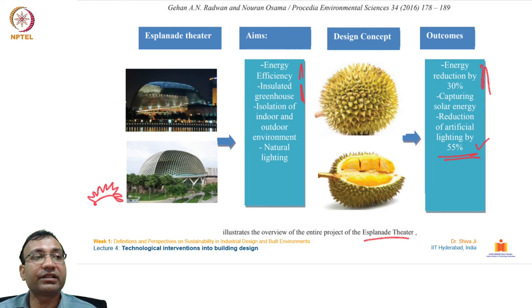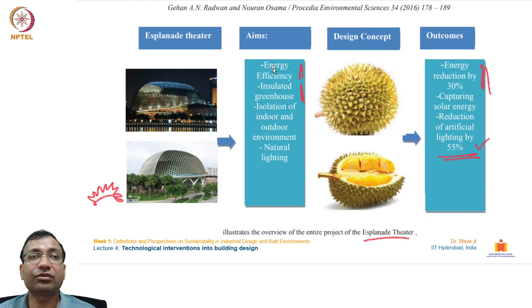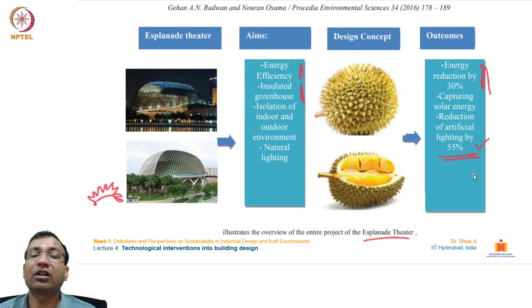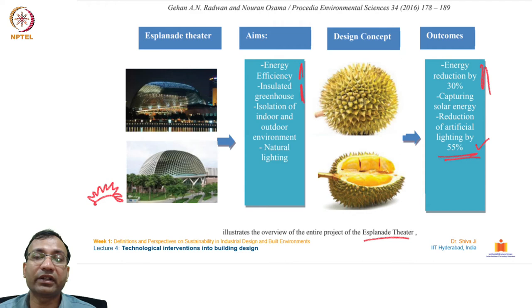Another building example shows how a nature-derived surface form was used to optimize energy efficiency, insulate the structure, isolate indoor and outdoor environments, and allow natural light. The result was energy reduction of up to 30%, solar energy capture, and reduction of artificial lighting by 55% — demonstrating the significant difference that adopting a natural form can make compared to traditional man-made design.